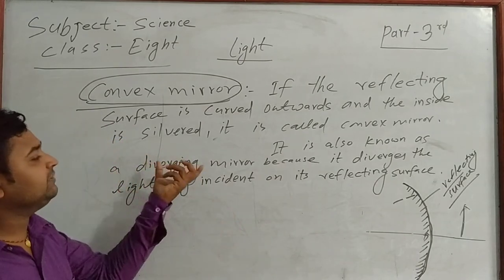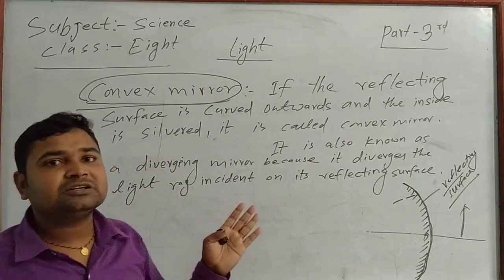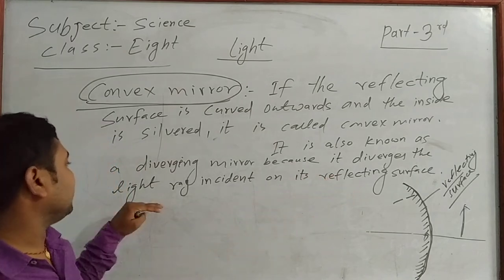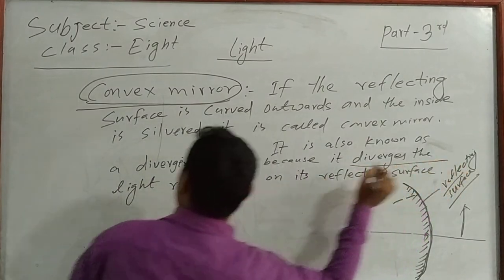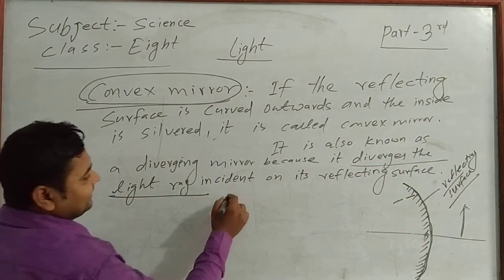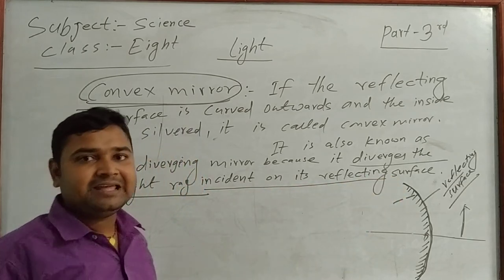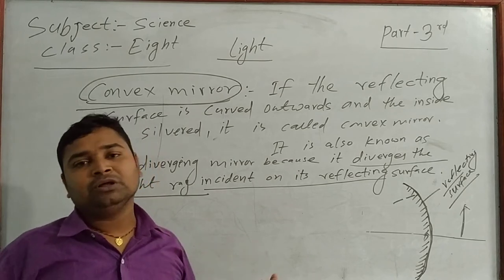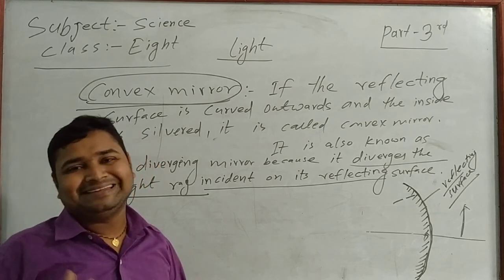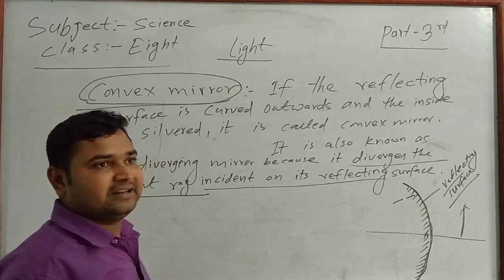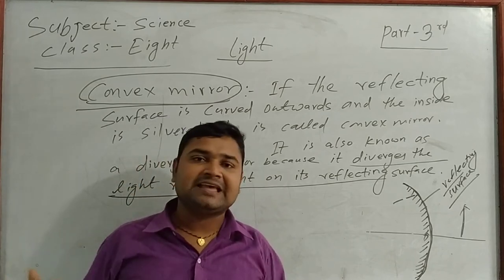The convex mirror is also known as the diverging mirror, because it diverges the ray of light incident on its reflecting surface. Now, what is the incidence ray? What is the reflected ray? What is the normal? We have already studied about these in previous classes — angle of incidence and angle of reflection.